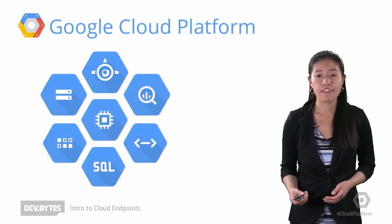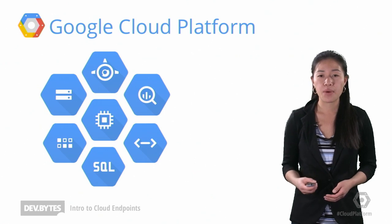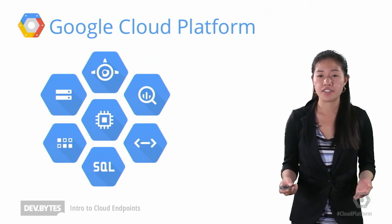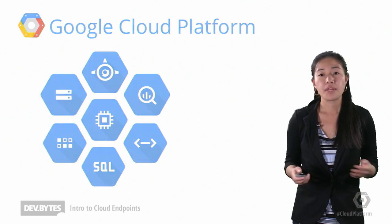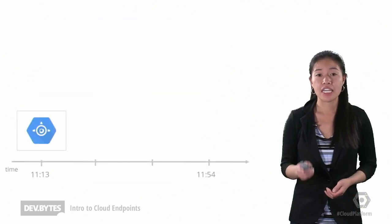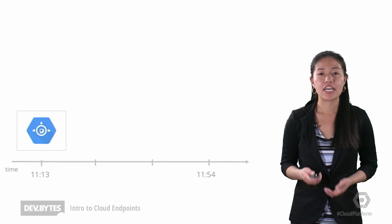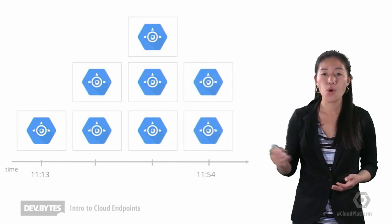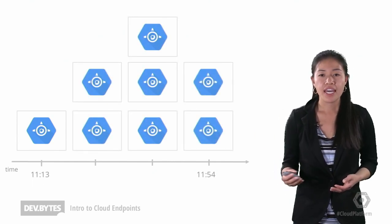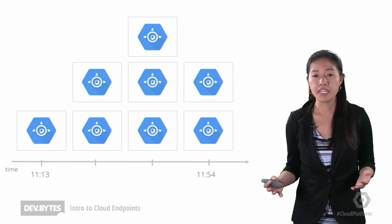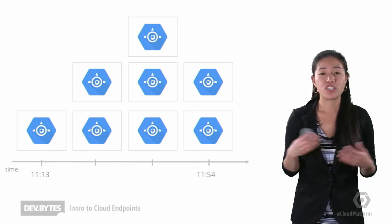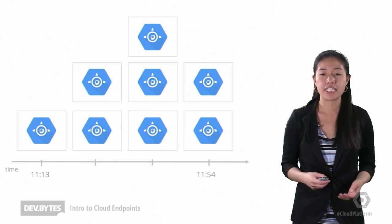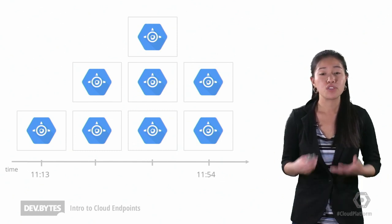Not only do you get a shared back end for your Android, iOS, and web clients, but you can also take advantage of all the other products and services that are available. With App Engine comes the ability to scale very easily — as you get more traffic, Google automatically spins up more App Engine instances for you. And when the traffic levels off after the peak, we kill off the instances that you don't need anymore. You don't need to trouble yourself with estimating resource needs ahead of time.